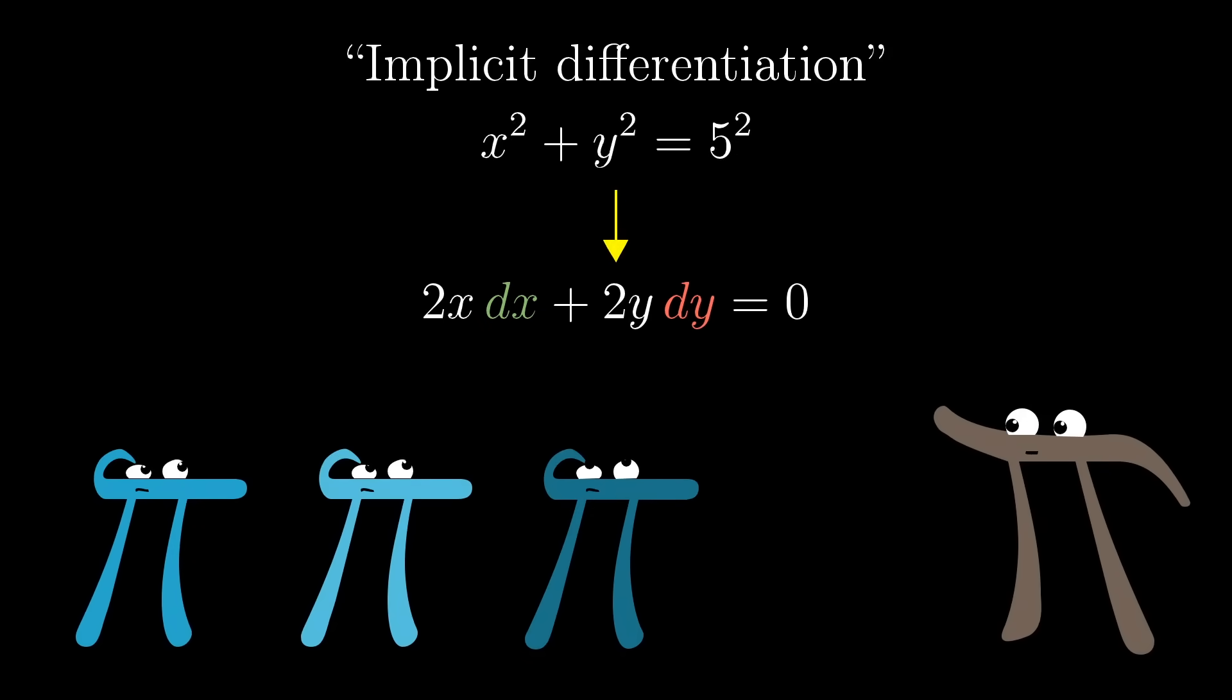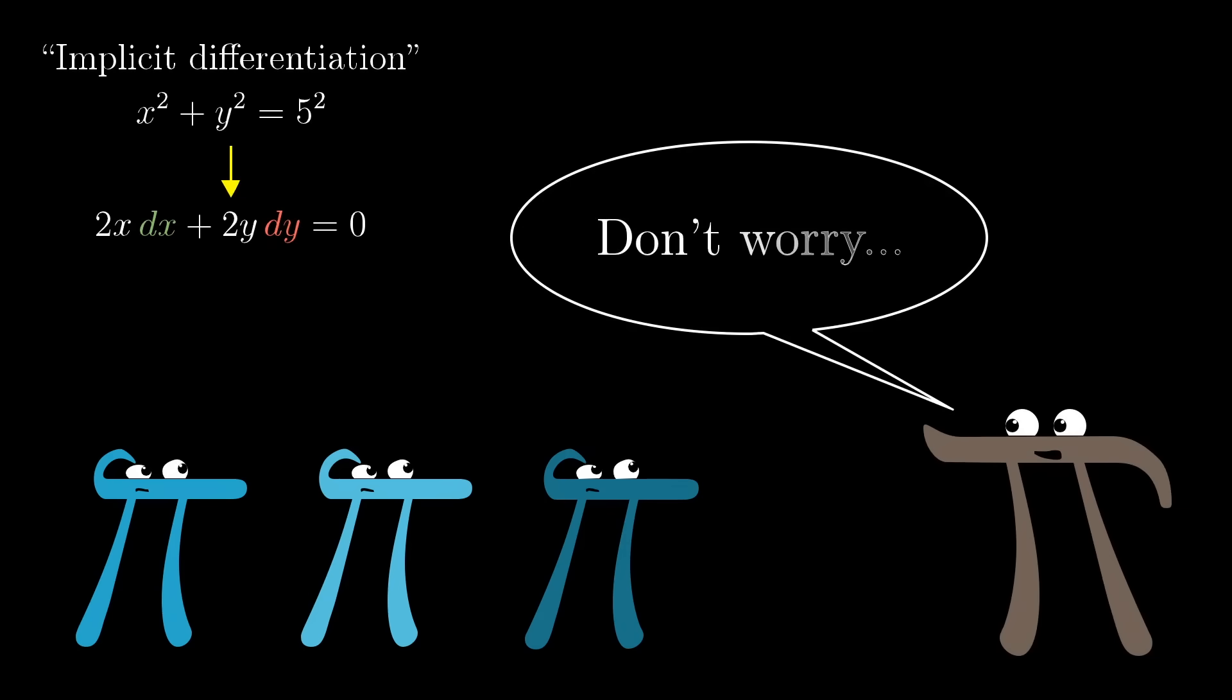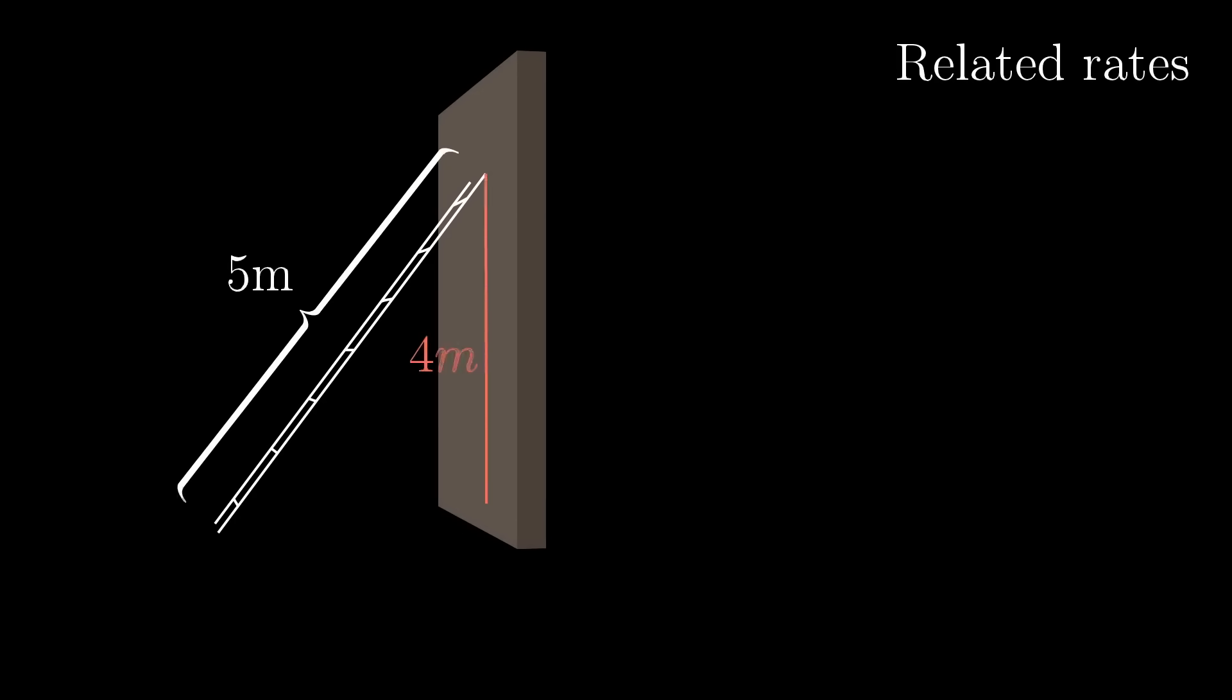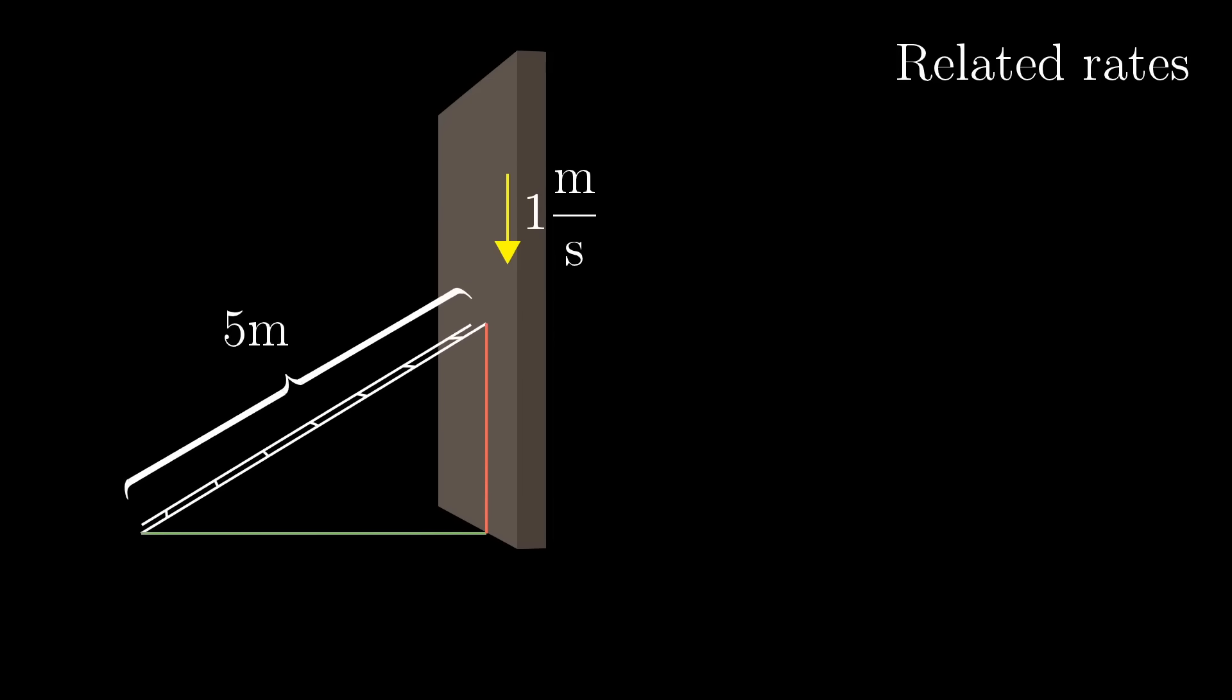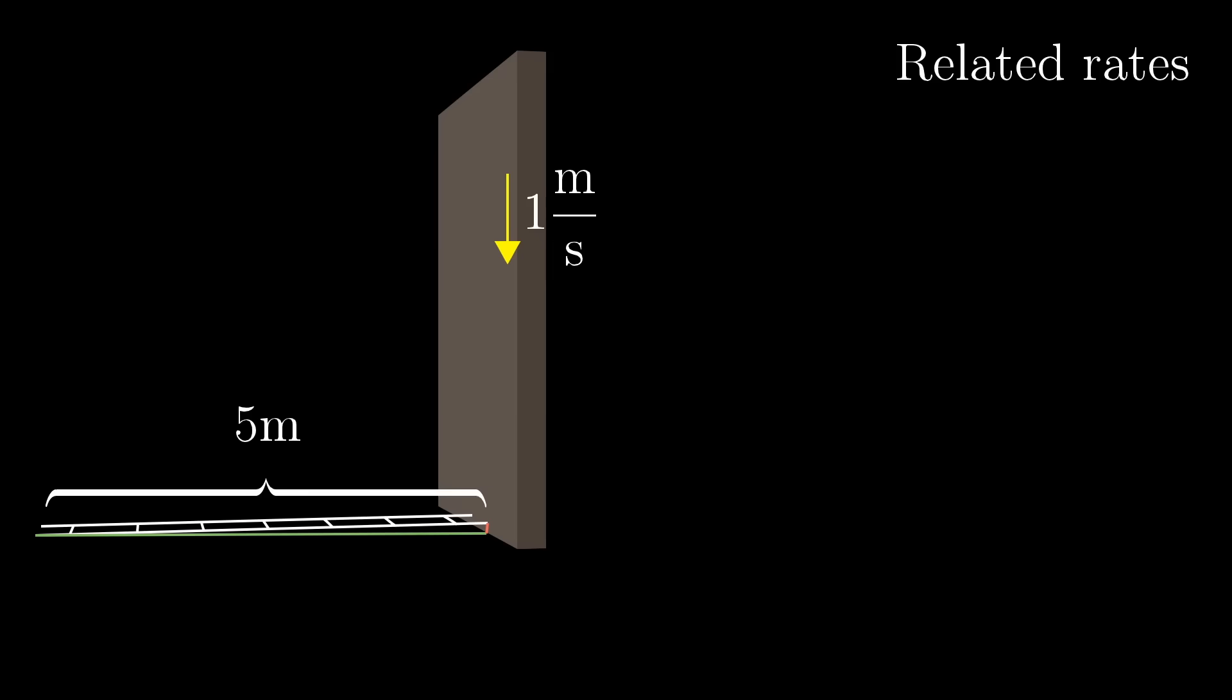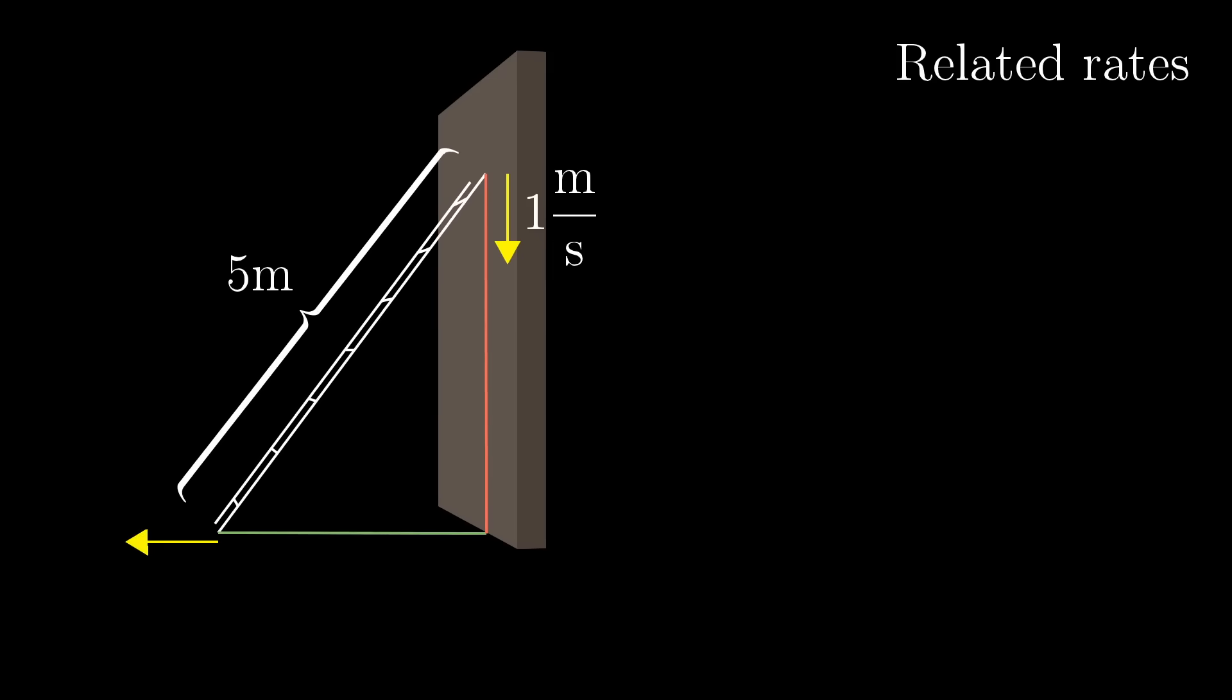Don't worry, I have an explanation for how you can interpret taking a derivative of an expression with two variables like this. But first, I want to set aside this particular problem and show how it's connected to a different type of calculus problem, something called a related rates problem. Imagine a 5 meter long ladder held up against a wall where the top of the ladder starts 4 meters above the ground, which by the Pythagorean theorem means that the bottom is 3 meters away from the wall. And let's say it's slipping down in such a way that the top of the ladder is dropping at a rate of 1 meter per second. The question is, in that initial moment, what's the rate at which the bottom of the ladder is moving away from the wall?